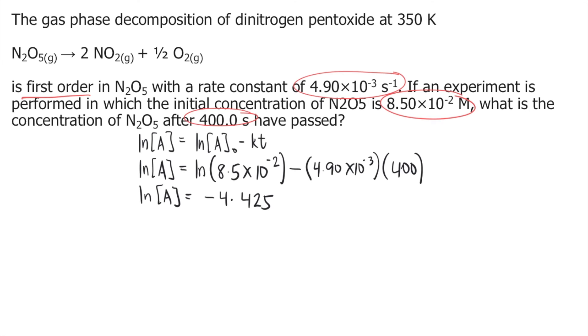Now, if you want to get A and remove the ln, what you do is e raised to -4.425.